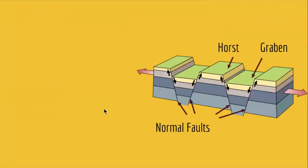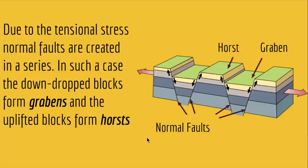When you get a series of normal faults in a row — imagine strata being pulled from both sides — the strata breaks into parts creating a series of normal faults. This has a special name in geology: Horsts and Grabens. Due to tensional stress, the down-dropped blocks form Grabens and the uplifted blocks form Horsts. You can see them in mountain ranges where tensional stress creates depressed areas called Grabens and uplifted areas called Horsts.